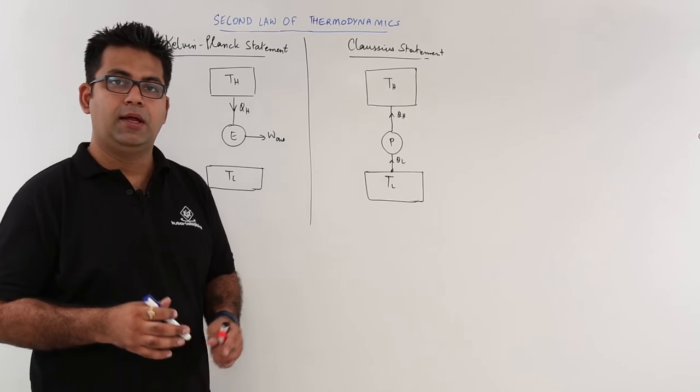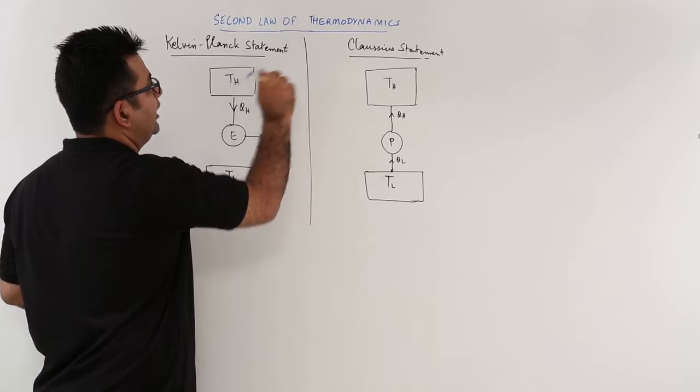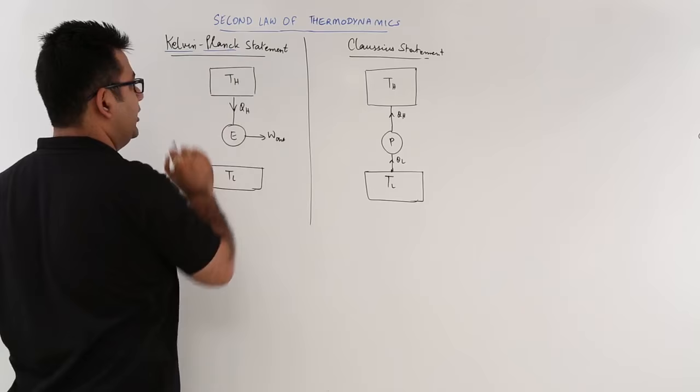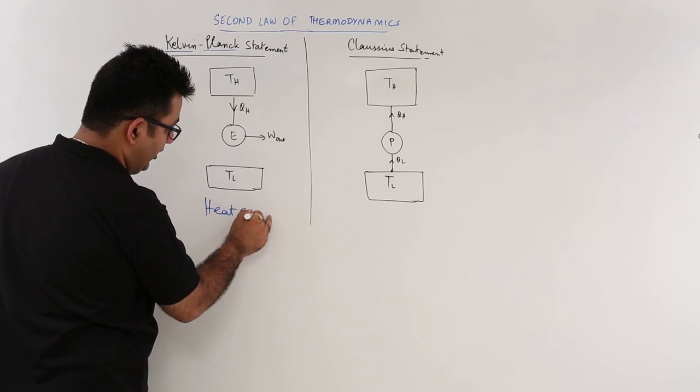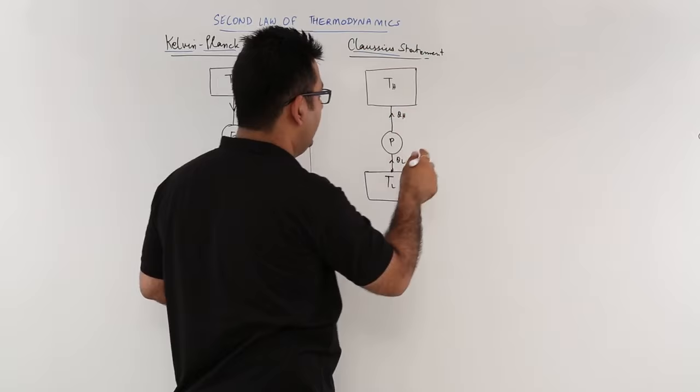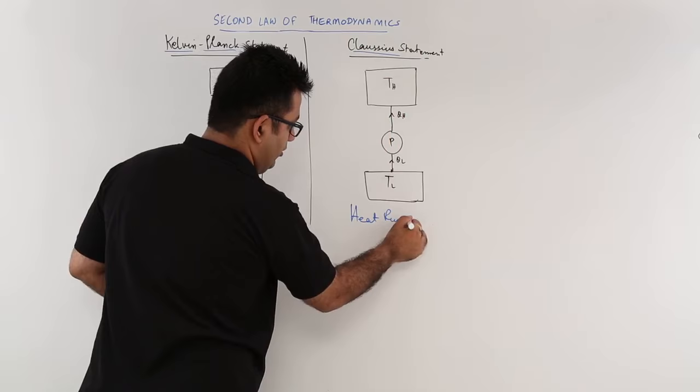Now let us formally define the two statements for the second law of thermodynamics. The first statement is called the Kelvin-Planck statement, which relates to heat engines. The second statement is the Clausius statement, which relates to heat pumps or refrigerators. The underlying principle is the same for both of them.